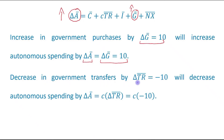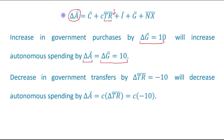A decrease in government transfers by ΔTR̄ = minus 10 will decrease autonomous spending. When transfer payments are reduced, the autonomous spending will also be reduced by c × ΔTR̄, where c represents MPC. So it equals MPC times change in transfer payments, which equals MPC times minus 10. The decrease in government transfers will decrease autonomous spending by this amount.